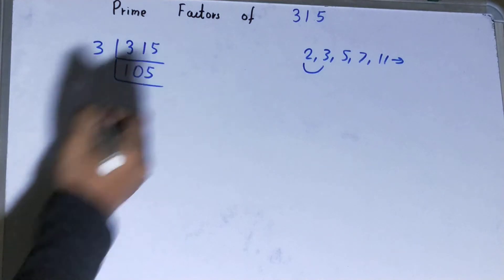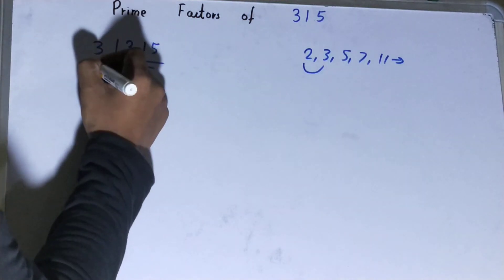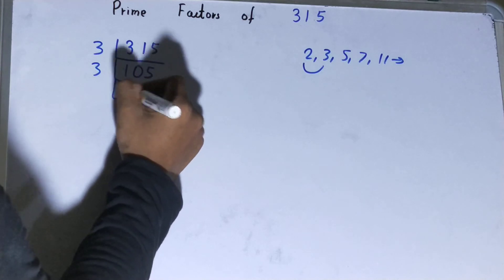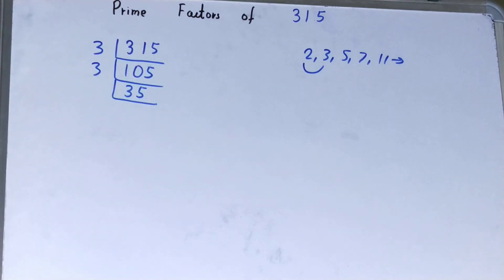Is this 35 further divisible by 3? No. So we'll go to the next lowest prime number, that is 5. Is 35 divisible by 5? The last digit is 5, so yes it is divisible.